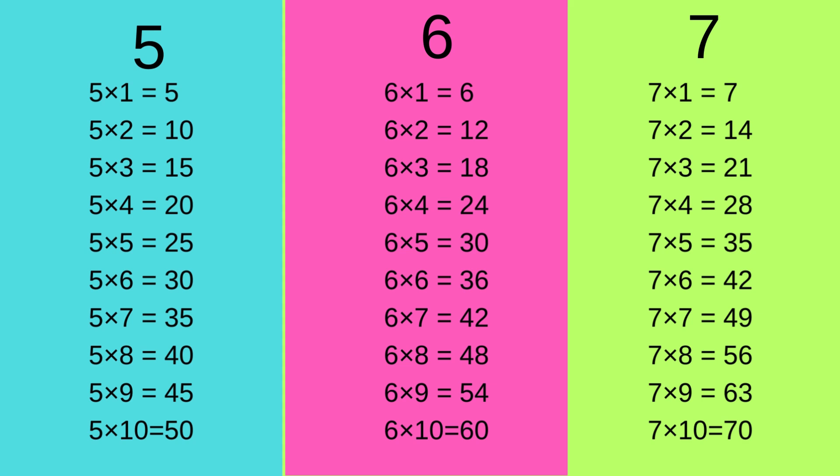Now we will do the table of 7. Let us begin. 7 1's are 7, 7 2's are 14, 7 3's are 21, 7 4's are 28, 7 5's are 35, 7 6's are 42, 7 7's are 49, 7 8's are 56, 7 9's are 63 and 7 10's are 70.